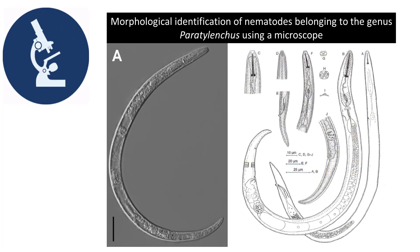In the first part, we will briefly go through the major diagnostic features useful in identifying nematodes from the genus Paratelencus. It is important to note that, unlike other plant parasitic nematodes, morphological identification of Paratelencus is affected by the limited number of diagnostic features present. However, we can rely on some characters to effectively identify Paratelencus nematodes to the genus level.